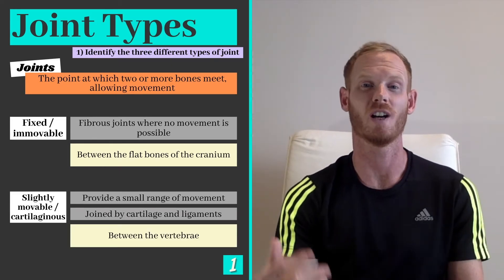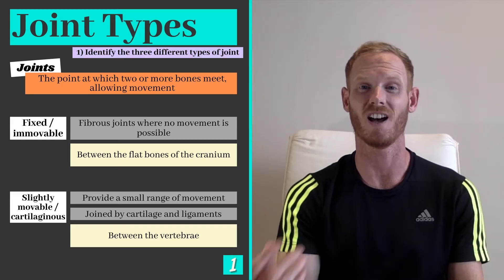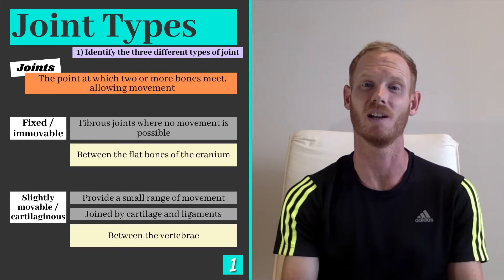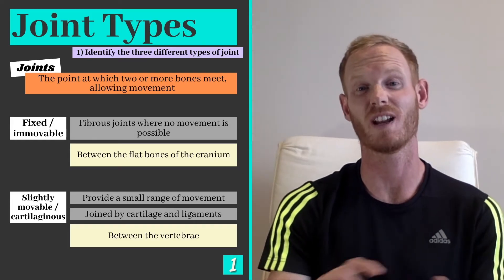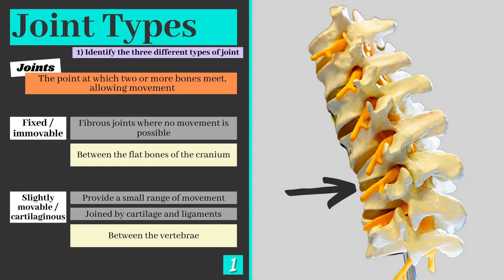Slightly movable or cartilaginous joints contain cartilage and ligaments which restrict the movement of these joints. As a result, only a small range of movement is possible. Cartilaginous joints can be found between the vertebrae of the spine.